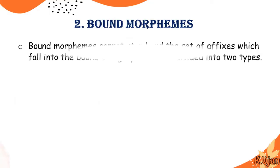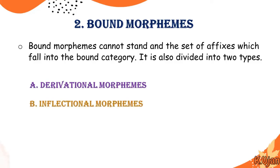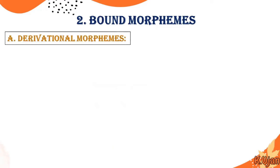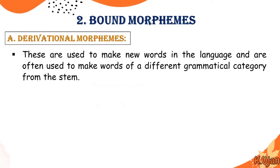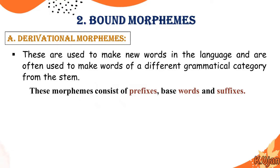Here is another type of morpheme known as bound morphemes. Bound morphemes cannot stand alone and include the set of affixes — affixes meaning prefixes and suffixes — which fall into the bound category. Bound morphemes are divided into two types. Derivational morphemes are used to make new words in the language and are often used to make words of a different grammatical category from the base. These include prefixes, base words, and suffixes. Base words are also part of free morphemes.